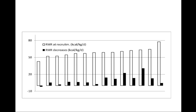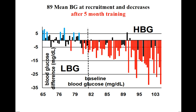There is a direct proportion between RMR at recruitment (empty columns) and RMR decrease during IHMP (black columns). We studied mean BG (MBG) of 89 adults at recruitment and individual decreases after 5 months of training the initial hunger meal pattern. On the abscissa, recruitment MBG; on the ordinate, columns show the MBG decrease for each single subject after 5 months training. Red columns mean significant decrease. MBG, like RMR, decreases during IHMP in proportion to the height of the value at recruitment. The subject who had 100 mg/dL MBG at recruitment decreased about 30 mg/dL under IHMP.